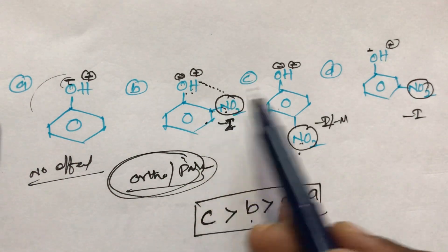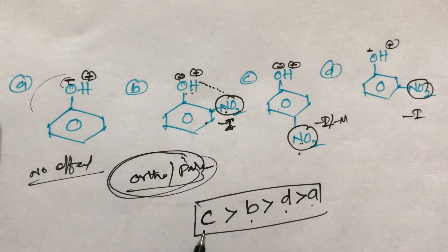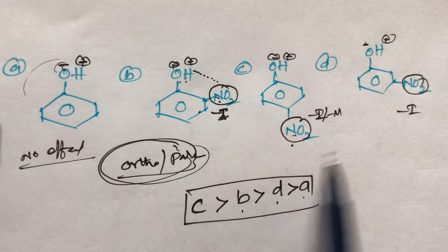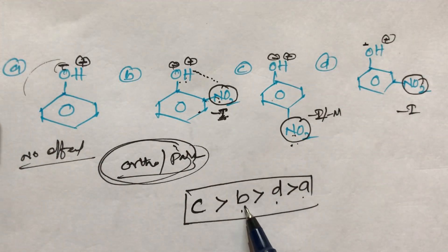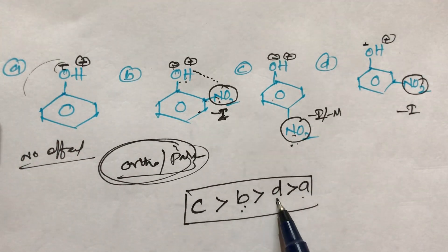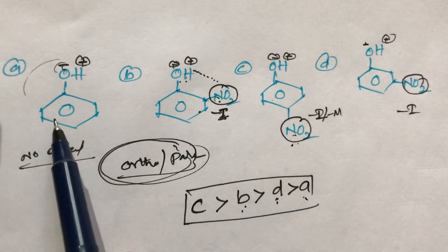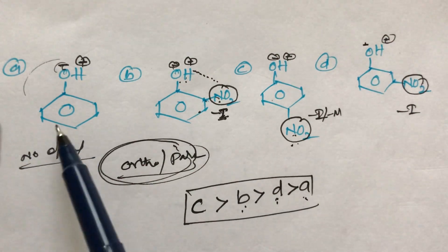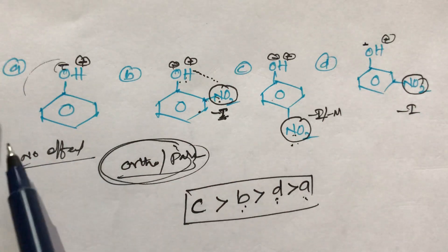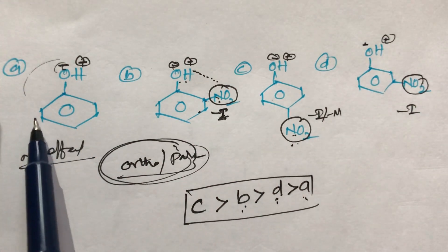So to summarize: compound c is more acidic than compound b, compound b is more acidic than compound d, compound d is more acidic than compound a. Compound a has the least acidic nature because there are no -I groups present.